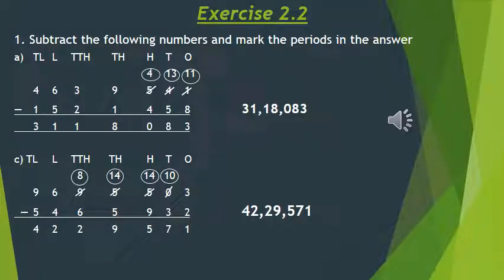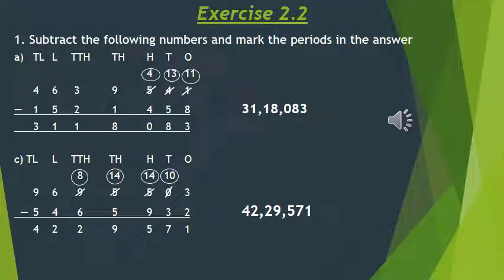In the same way we have done Part C. Starting from the ones place: 3 minus 2 is 1. Then we can't subtract 3 from 0, so we make 0 into 10. If we are borrowing from the hundreds place, 5 becomes 4. Now we can't subtract 9 from 4, so we make it 14.